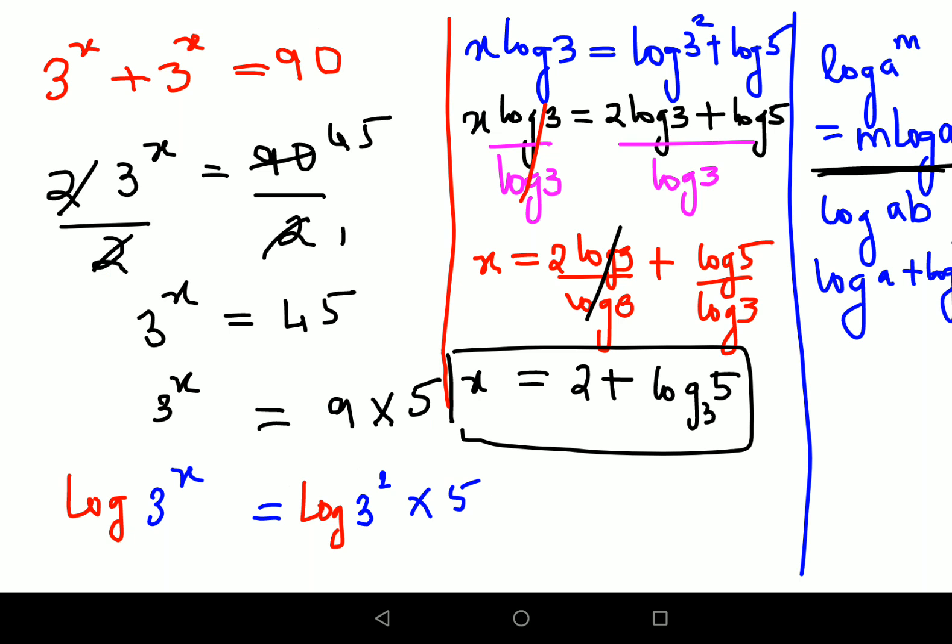So here we could have taken x = 2 + (log 5)/(log 3), whose value is nothing but 1.465. So I could have said x value as nothing but 2 + 1.465, which is about 3.465.